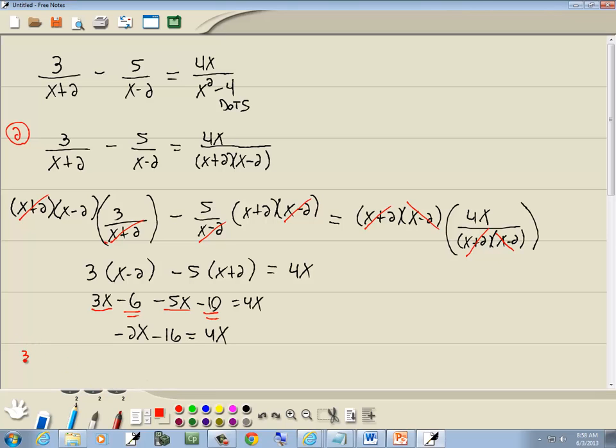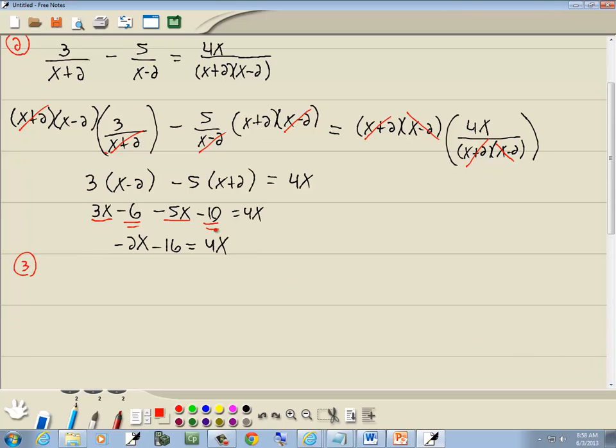Now step 3 says get everything with a variable on one side and numbers on the other. So I'm going to take this 4x, move it to the left side. I'll take negative 16, move it to the right side. Any time you move anything across equals, sign changes. So the 4x becomes a negative 4x and a negative 16 becomes a positive 16. Combine together like terms at any step. Negative 2x, negative 4x is negative 6x.